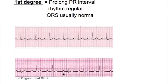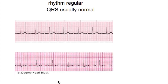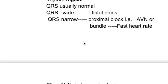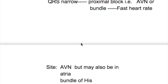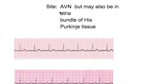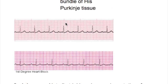Here is one more example of a prolonged PR interval. In the first degree block there is no QRS drop. If the QRS is wide then it means it is a distal block, and if the QRS is narrow then it is a proximal block in the AV node or in the bundle, and the heart rate is fast. The site of block is usually in the AV node but it may also occur in the atria, bundle of His, and the Purkinje tissues.